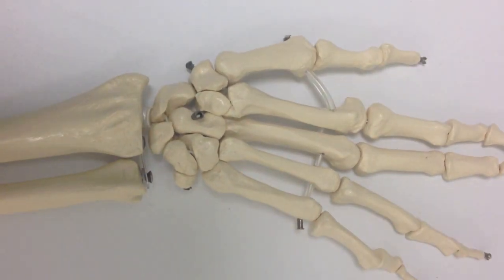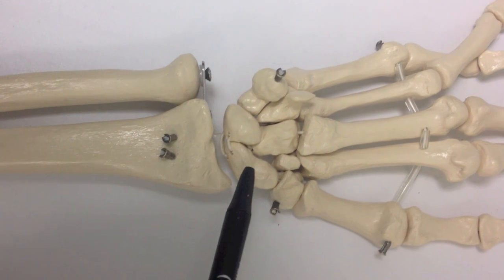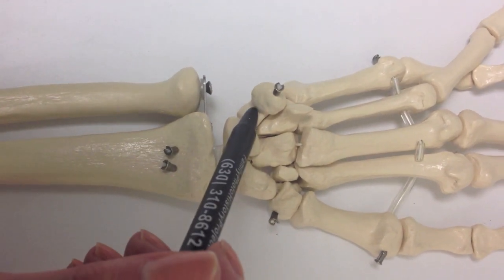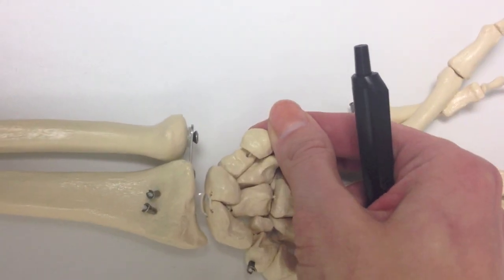If we flip it over, we can do it this way too. So we'll start with the scaphoid again: scaphoid, lunate, triquetrum, pisiform, which is a little P-shaped carpal bone.